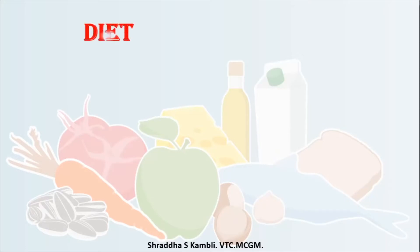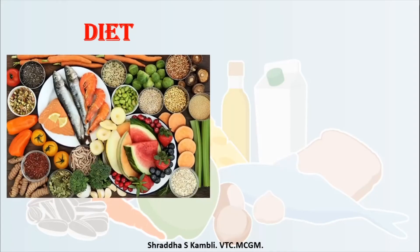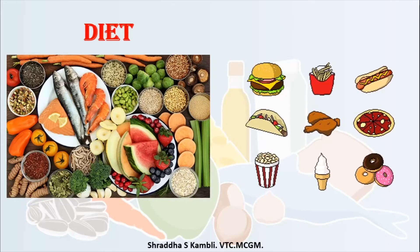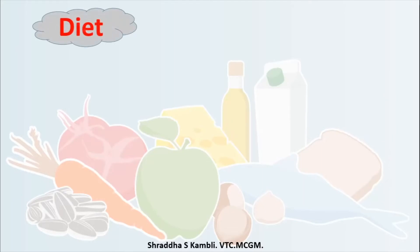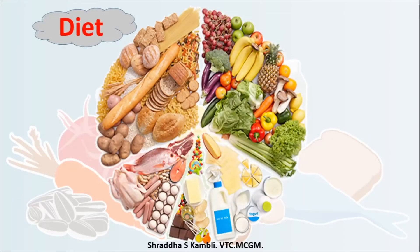So last time, children, we studied what the meaning of diet is. Whatever we eat during the course of the day — whether it is fruits, vegetables, grains, or spices — all these things are part of our diet. Diet is equal to the food that we eat. And whatever food we eat during one particular day is called our diet for that day.